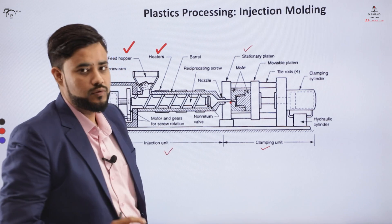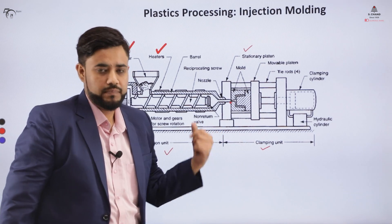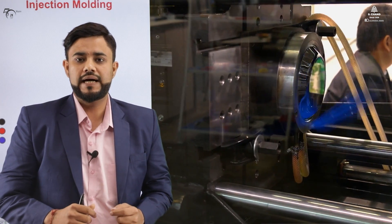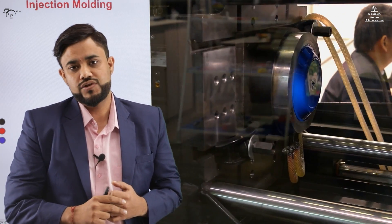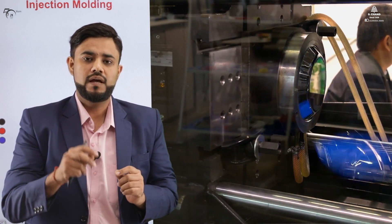This is the basic injection molding process with two main units: the injection unit, which injects the plastic inside the mold cavity, and the clamping unit, which clamps the stationary and movable platens together. As shown in the video, the plastic takes the shape of the cavity; when the moving platen separates, a gap is created and an ejection pin removes the formed part from the surface.